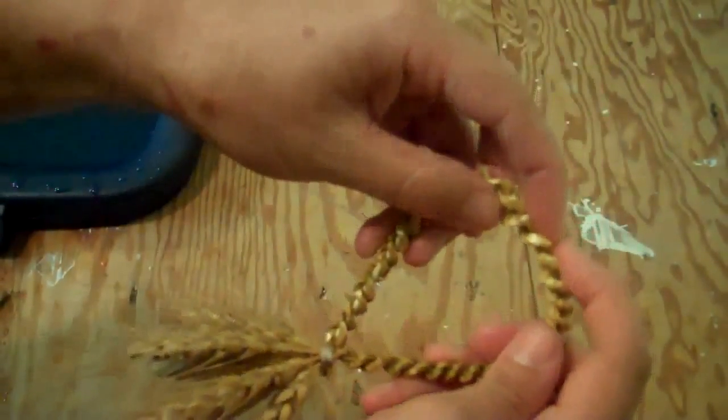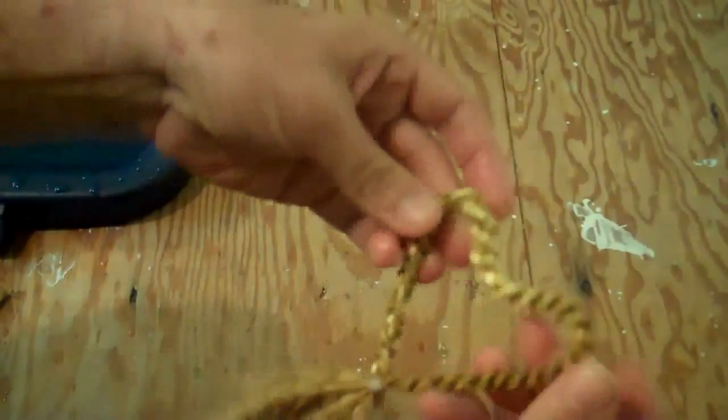Then shape the circle into a heart shape. The wreath wire core allows you to easily bend it.